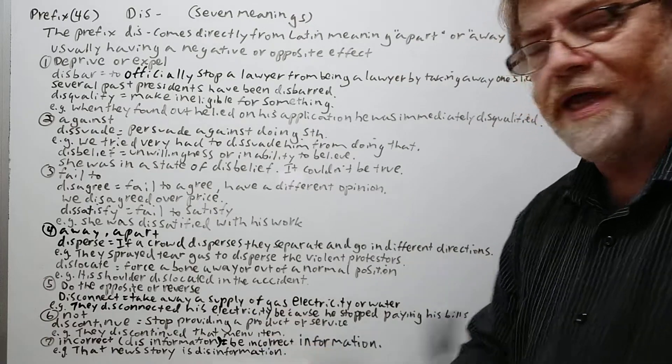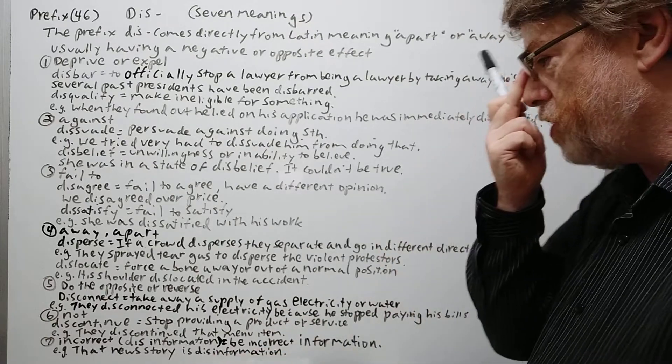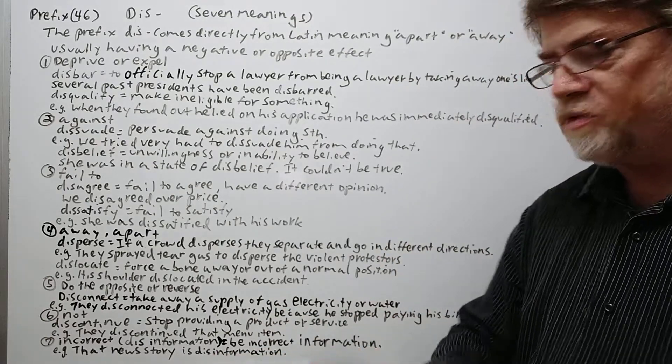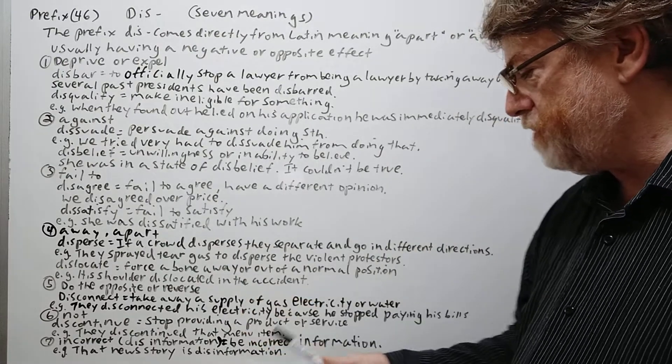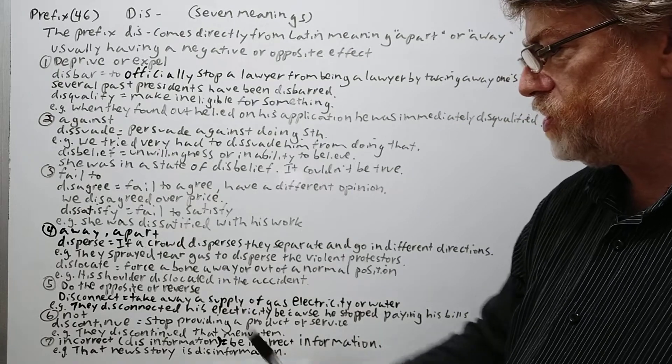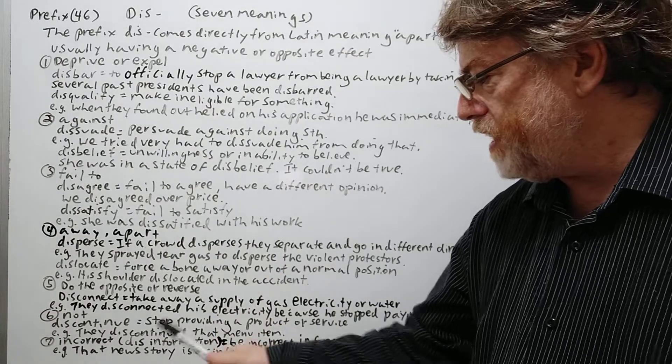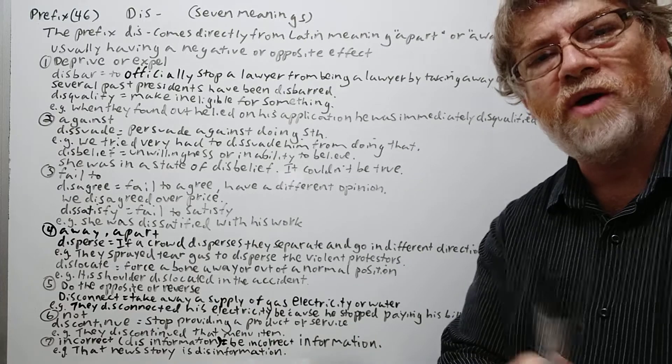And our last one, the meaning is more about incorrect. The word is disinformation—to be incorrect information. Here's our example: that news story is disinformation.